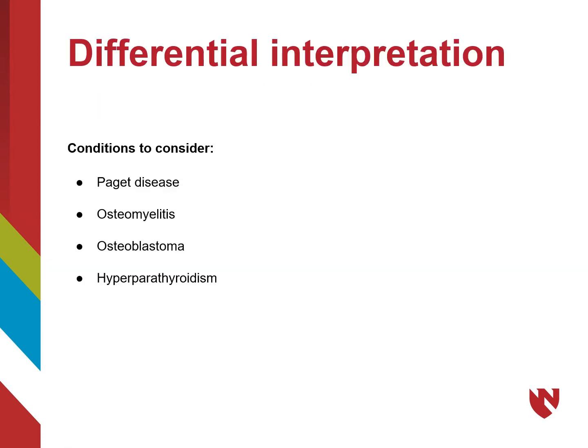There are four main conditions to consider for diagnosis: Paget's disease, osteomyelitis, osteoblastoma, and hyperparathyroidism. All of these are conditions that share some clinical and radiographic features with fibrous dysplasia. We are going to look into each of these separately and see how we can rule them out.